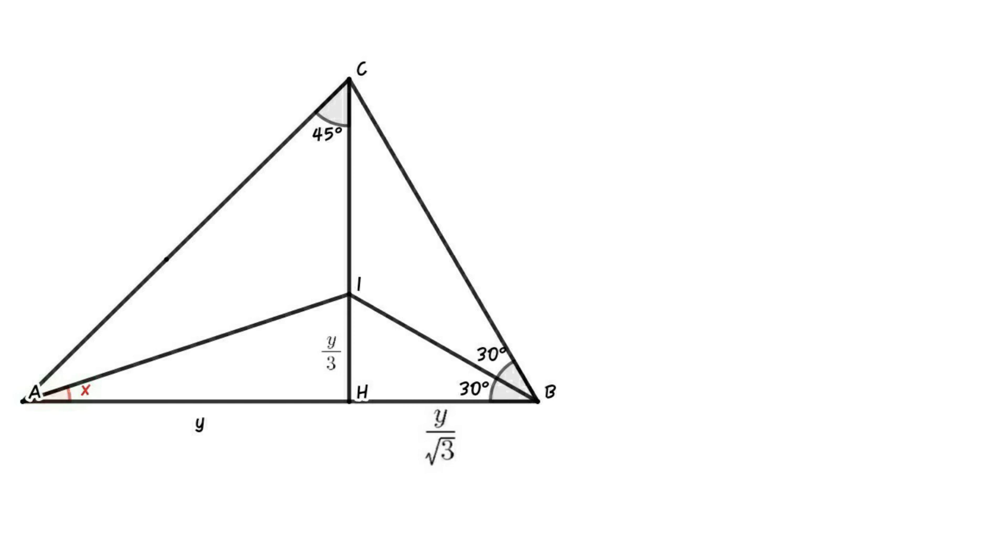Consider triangle AHI. Then tan x equals HI over AH. That is, tan x equals y over 3 over y, or tan x equals 1 over 3. So x equals tan inverse 1 over 3, or x equals 18.43 degrees.